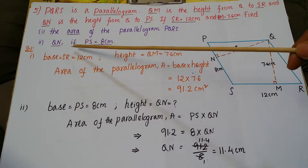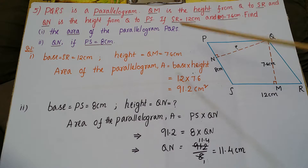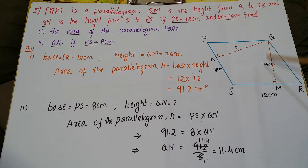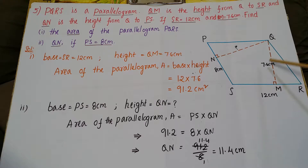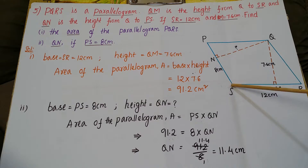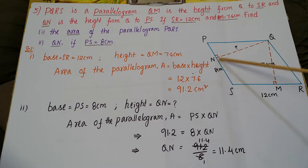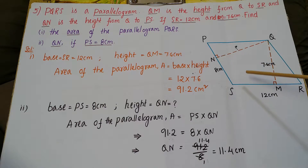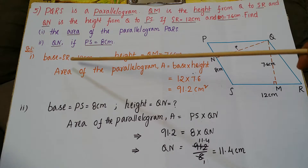The second part asks to find QN if PS is equal to 8 centimeters. So the base SR is 12 centimeters, the corresponding altitude QM is 7.6 centimeters. The base PS is 8 centimeters and we have to calculate the corresponding altitude QN. We also need to calculate the area of this parallelogram.